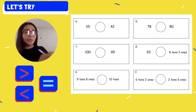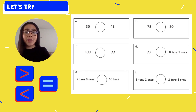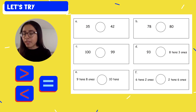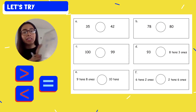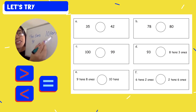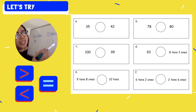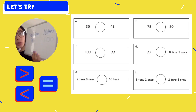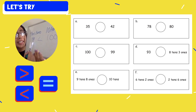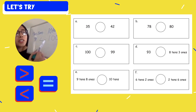Let's see for letter E. Letter E says nine tens and eight ones, and then we have ten tens. Think about what number we have when we say nine tens and eight ones — it's ninety-eight. What number do we have when we say ten tens? We have a hundred. So which symbol should I use — less than or greater than? My less than symbol. So it says ninety-eight is less than, meaning it's smaller than one hundred.